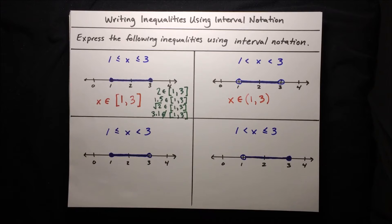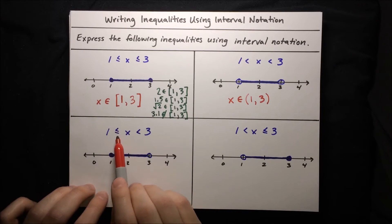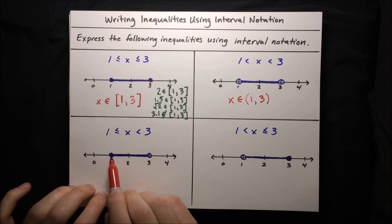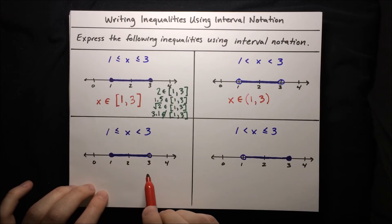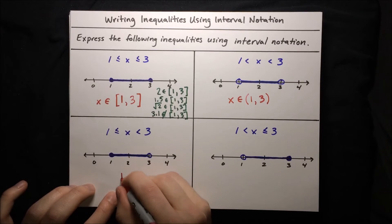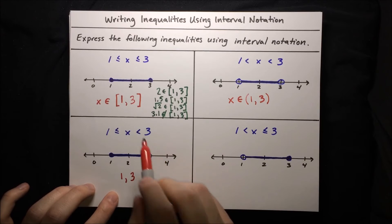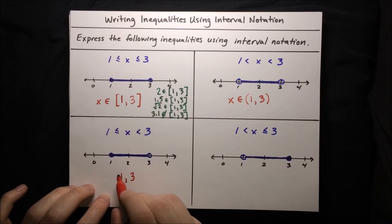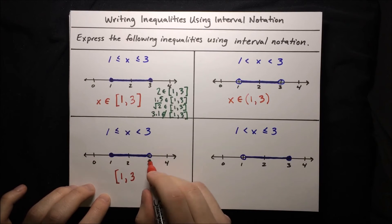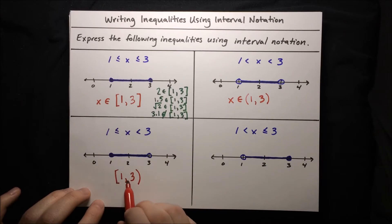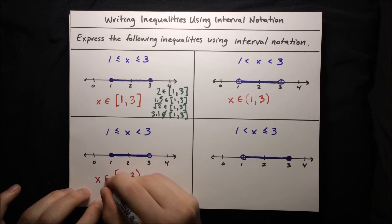Moving on to the next one — we have mixed notation: greater than or equal to and strictly less than. So this segment has a closed circle at 1 and an open circle at 3. We write our endpoints 1 and 3: bracket goes with the closed circle at 1, and parenthesis goes with the open circle at 3. The interval is [1, 3), and to say that x is in this interval, we write x ∈ [1, 3).